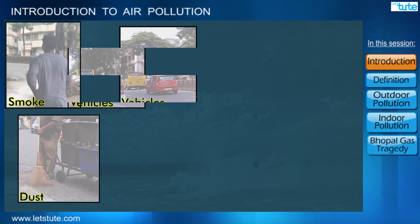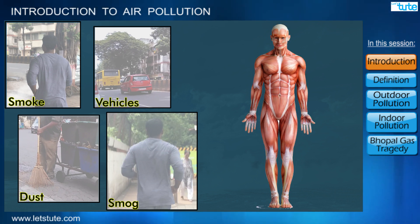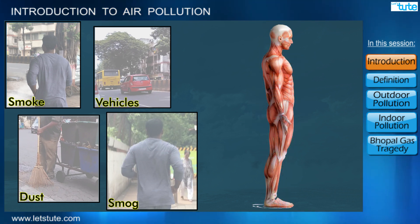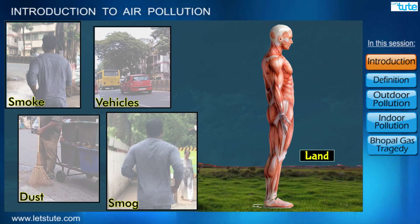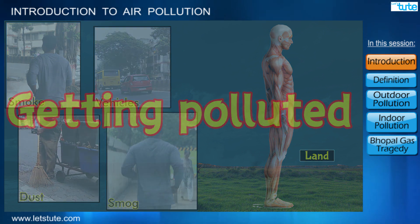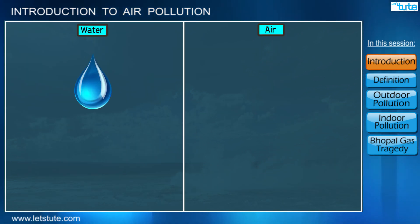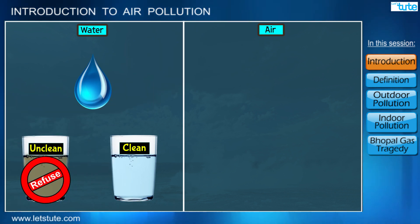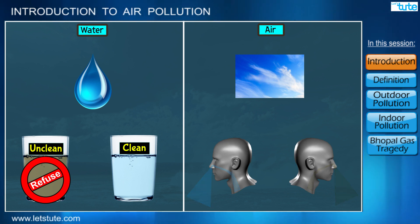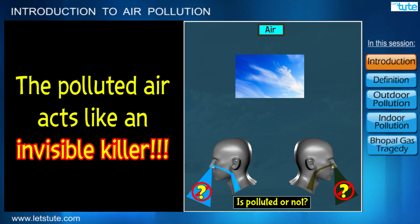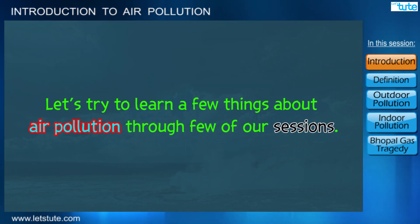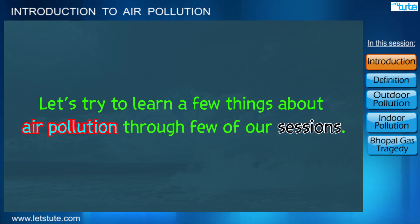Friends, just think — is this how it should be? Was the atmosphere or the air the same even earlier? If these conditions persist, won't it have a detrimental effect on our health? If you have noticed, all the basic requirements like the air which we breathe, the water which we drink, the land required for growing crops are all getting polluted. In the case of water we can see if it is clean or unclean and we can refuse to use it. But think about the air — is it easy to identify that it is polluted or not? And if at all we did, how can we choose not to breathe it? And thus the polluted air acts like an invisible killer. So let's try to learn a few things about air pollution through a few of our sessions.